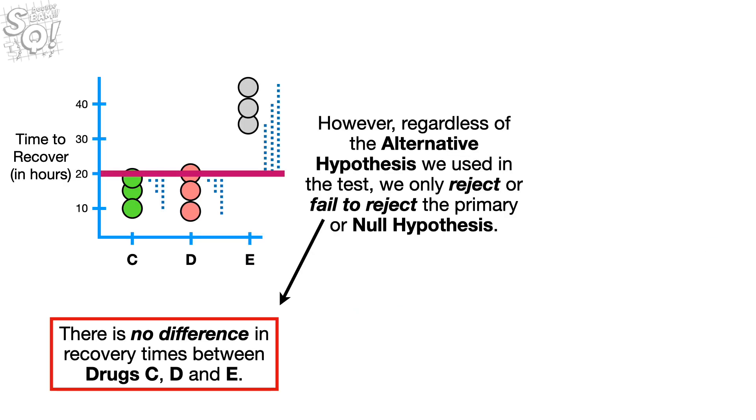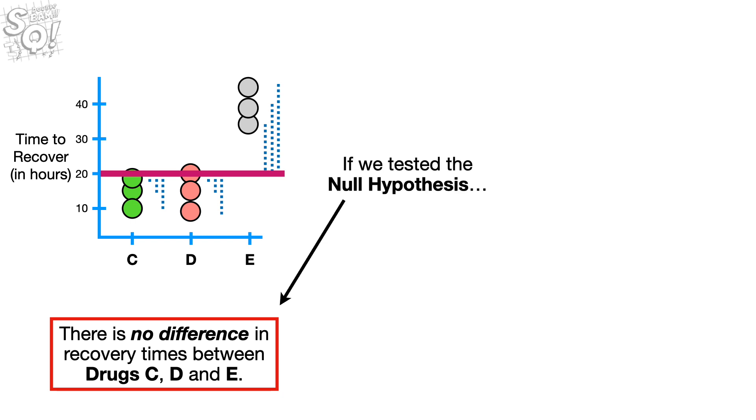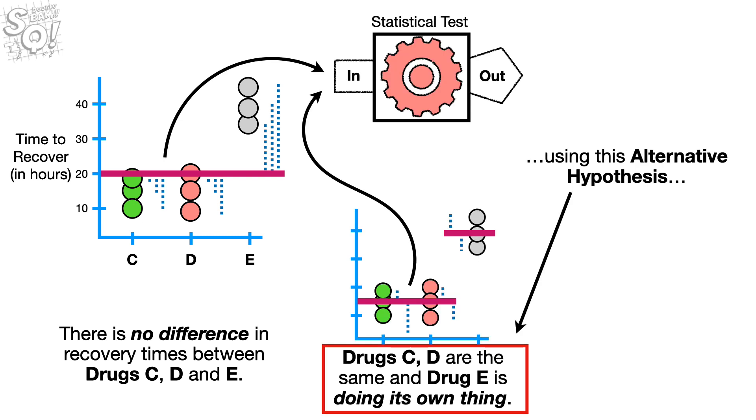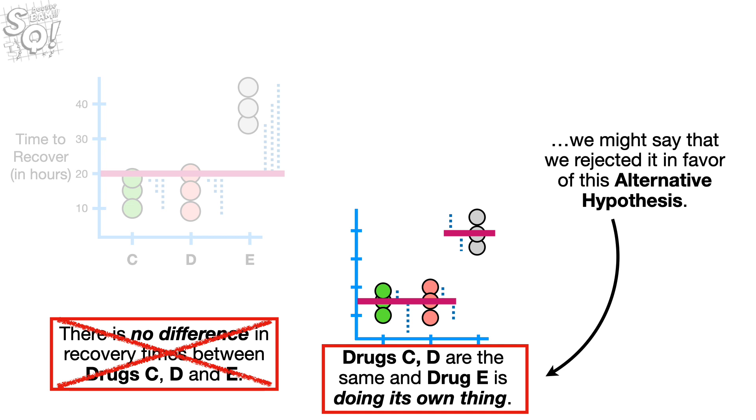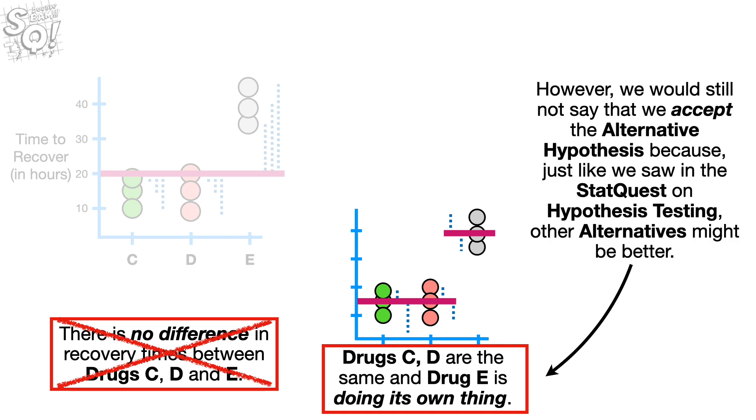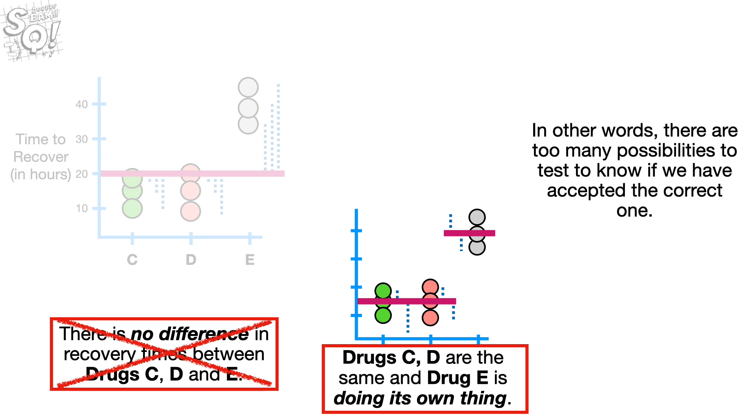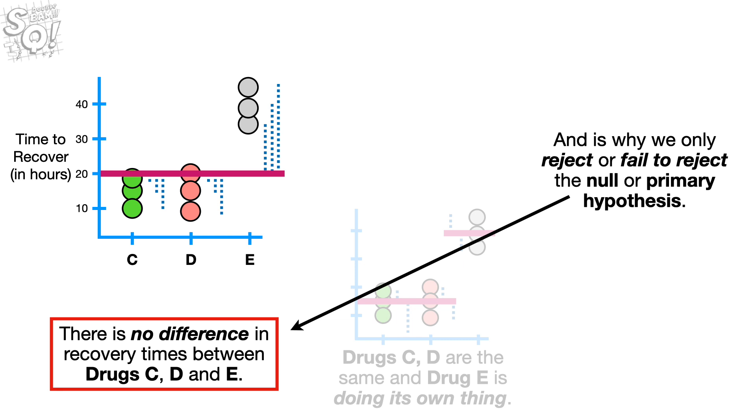However, regardless of the alternative hypothesis we used in the test, we only reject or fail to reject the primary or null hypothesis. If we tested the Null Hypothesis using this alternative hypothesis, and we rejected the Null Hypothesis, we might say that we rejected it in favor of this alternative hypothesis. However, we would still not say we accept the alternative hypothesis because, just like we saw in the StatQuest on hypothesis testing, other alternatives might be better. In other words, there are too many possibilities to test to know if we have accepted the correct one. And, this is why we only reject or fail to reject the Null or Primary Hypothesis.